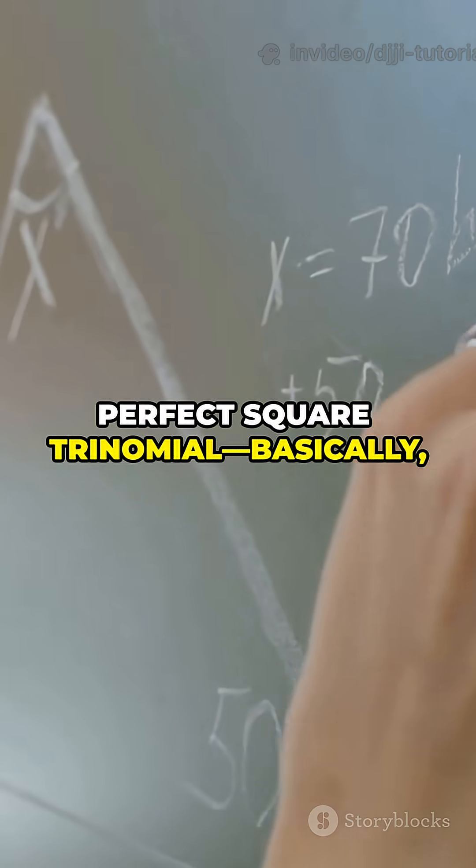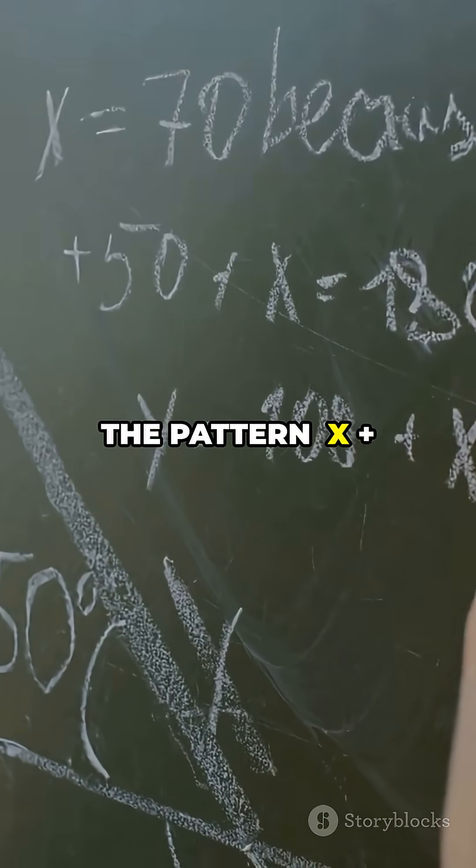This creates a perfect square trinomial, basically numbers that follow the pattern (x + number)².